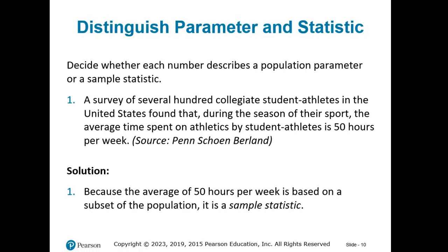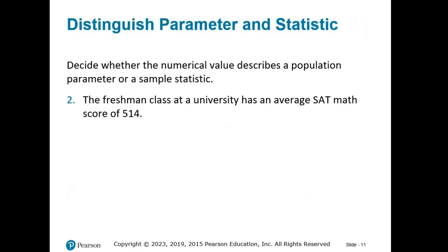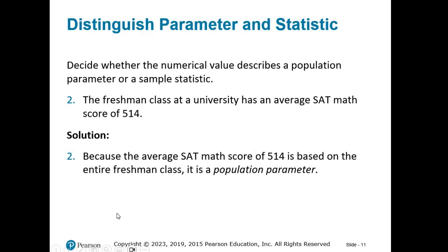The freshman class at a university has an average SAT math score of 514. Pause the video and decide if the number given is a population parameter or a sample statistic. The population given in this example is the entire freshman class, and since the number given includes results for every person in that population, this is a population parameter.